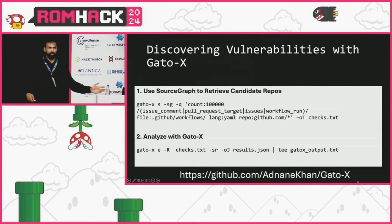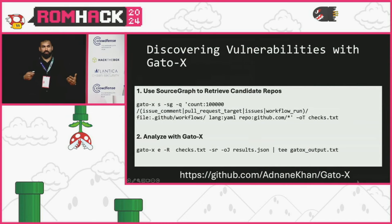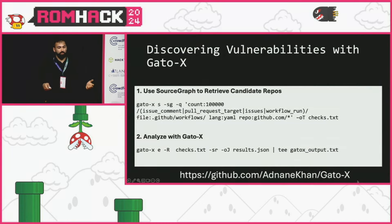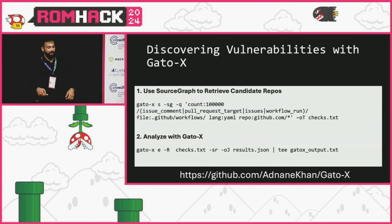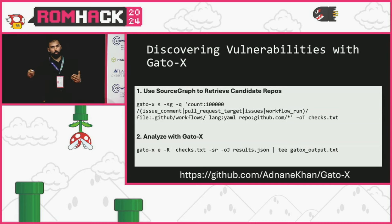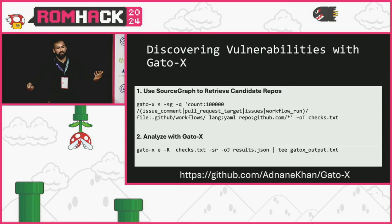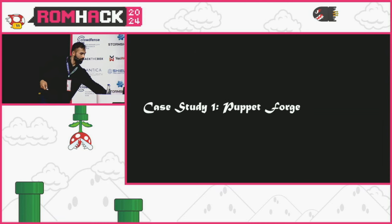If you want to use GatoX to find these vulnerabilities yourself, here are two commands I've used extensively during bug bounty hunting — I've made a lot of money just using these two commands. What they do is pull a set of candidate repositories using Sourcegraph and then run deep analysis on them.